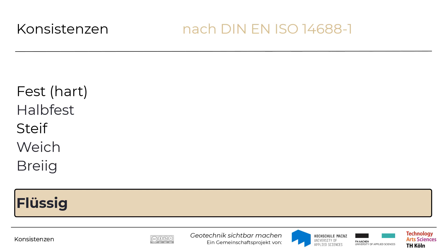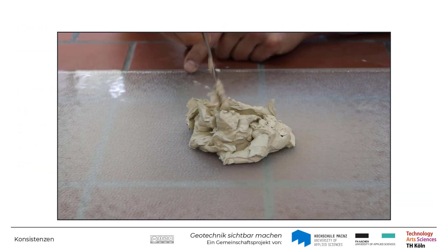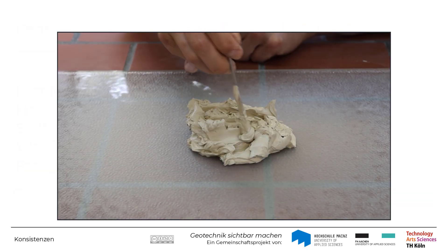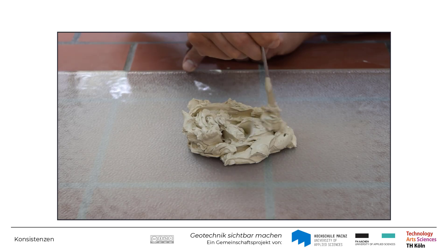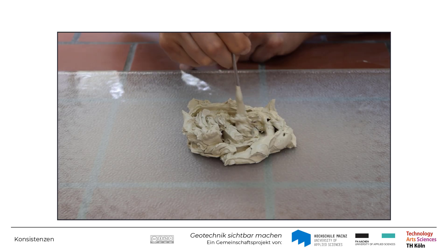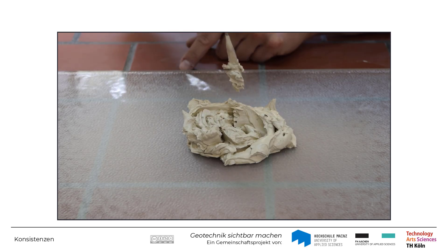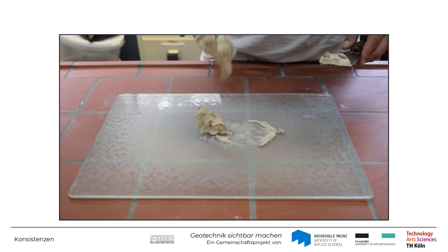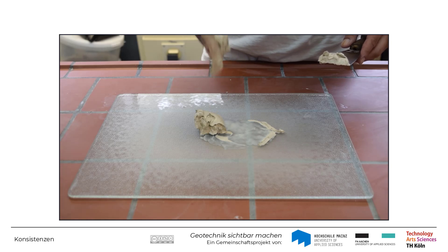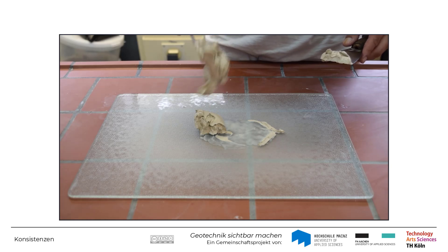Überschreitet der Wassergehalt des Bodens die Fließgrenze, wird die Konsistenz mit flüssig bezeichnet. Sie können erkennen, dass der Boden nicht flüssig wie eine Flüssigkeit ist, sondern eher als zähflüssig oder pastös beschrieben werden kann. Für diese Konsistenz gibt es keinen Versuch in der Norm.